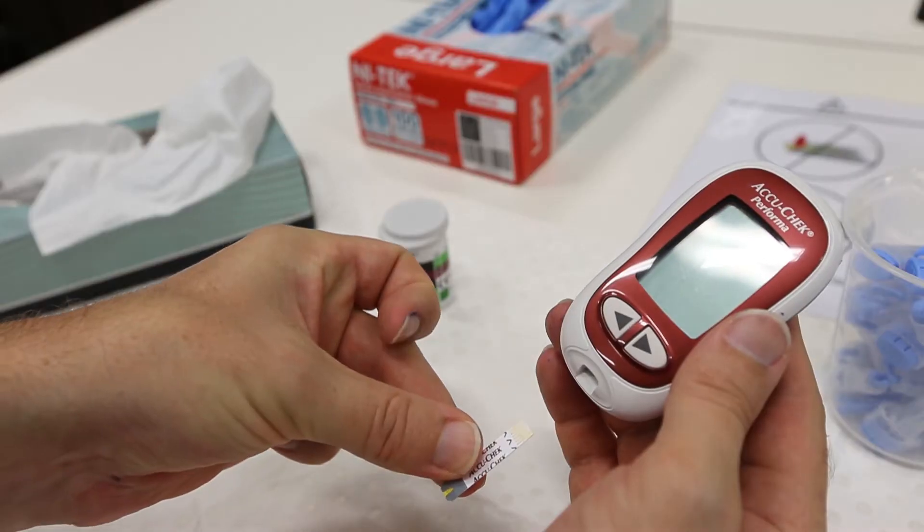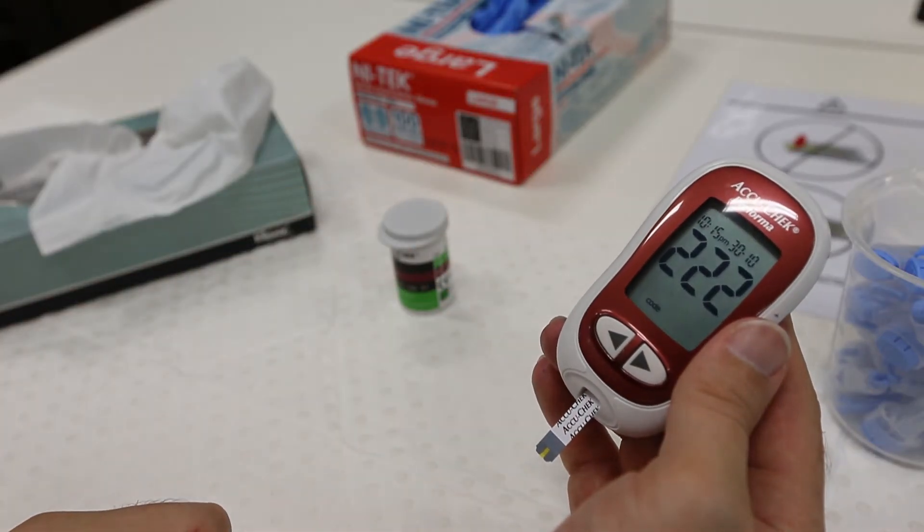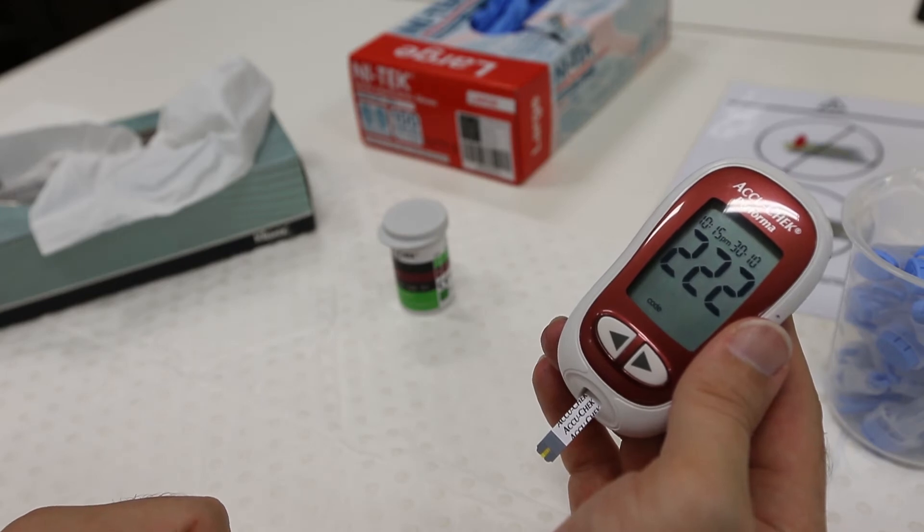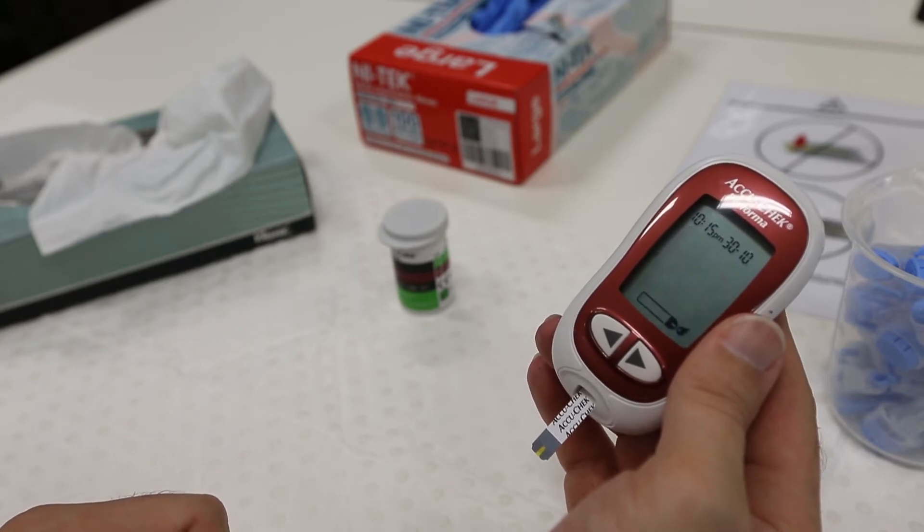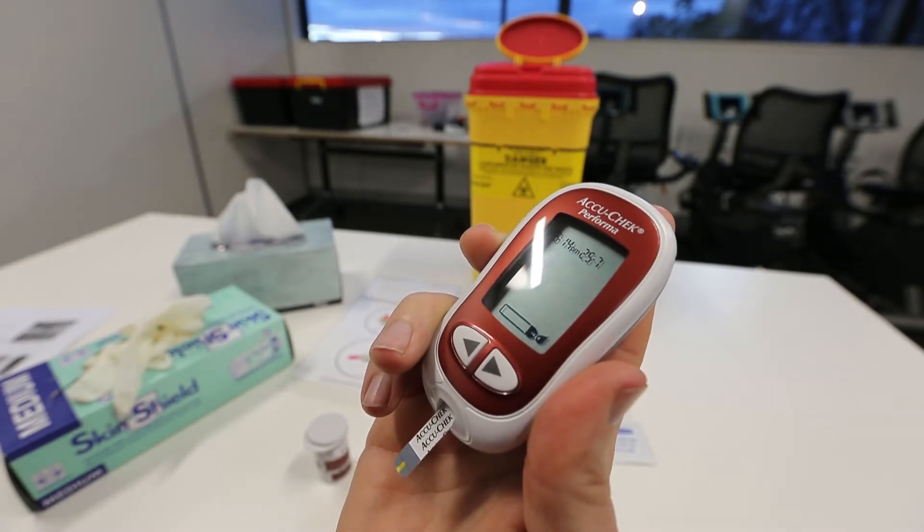To turn on the blood glucose meter, place the test strip with the copper electrodes facing up into the small slot at the base of the unit. The unit will now momentarily display a code before then displaying a symbol of a test strip with a small droplet of blood to indicate that the unit is now ready to collect blood.